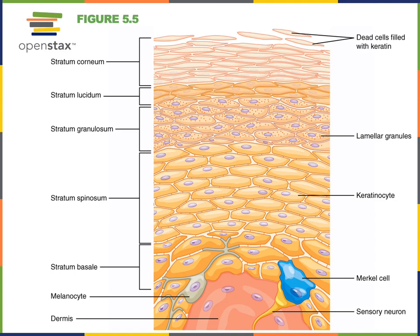The next layer toward the surface is stratum lucidum, which literally means clear layer. Stratum lucidum is a thin layer of only a few cells that are very thin and flat. Because they have a large amount of lipid granules, they don't stain well for light microscopy — the stratum lucidum cells don't absorb the stain and so appear clear. Stratum lucidum is only found in thick skin, making it a fifth layer present in thick skin, whereas thin skin has only four epidermal layers.